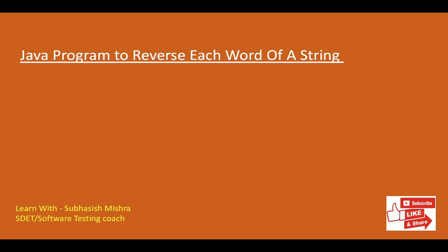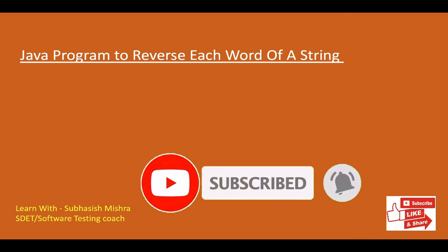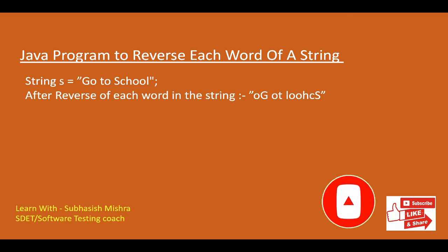Hey guys, this is Subhas. Today we will learn a Java program to reverse each word of a string. Here we have the string 'go to school'. After reversing each word, we will get 'og ot lhoocs'. There are three words: go, to, and school. We are reversing each one to get the final result.